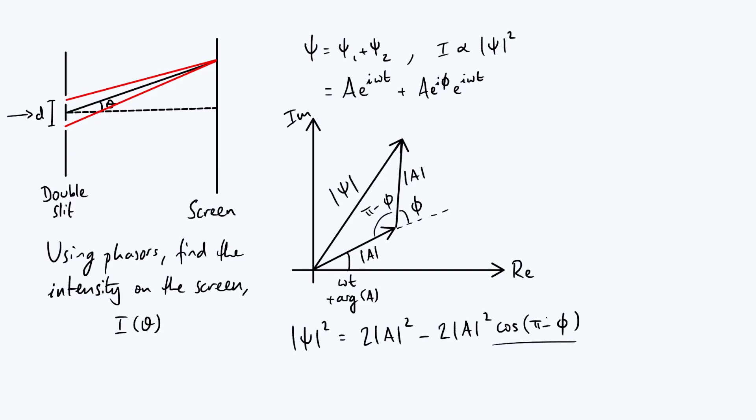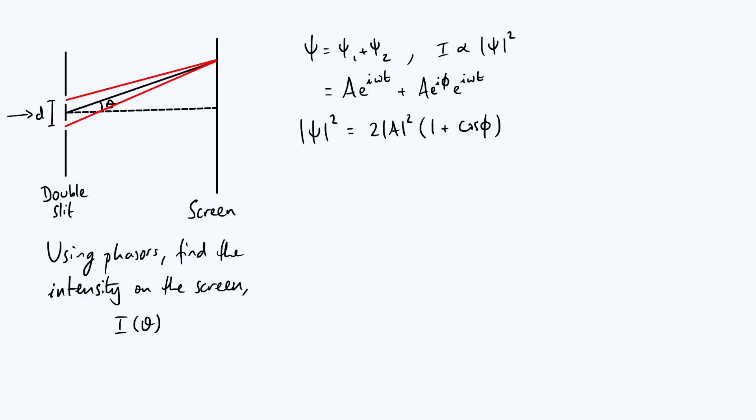Now we can use our double angle identities to note that cos of pi minus phi is the same as minus cos phi, and so you can then factor out 2 mod a squared and write this as 1 plus cos of phi.